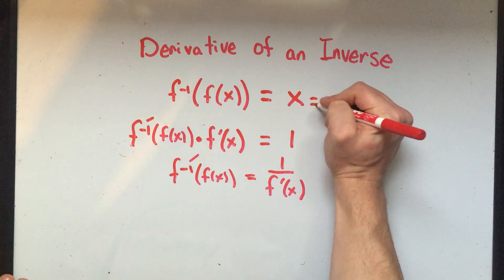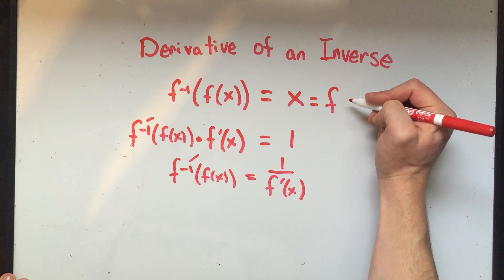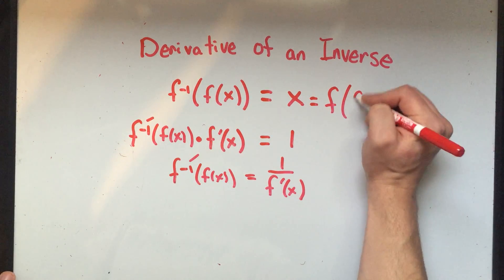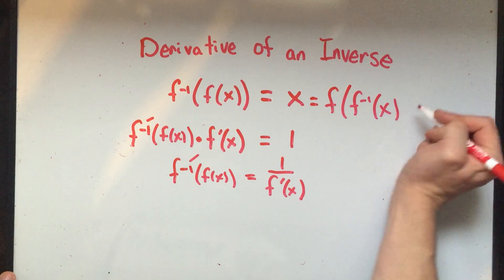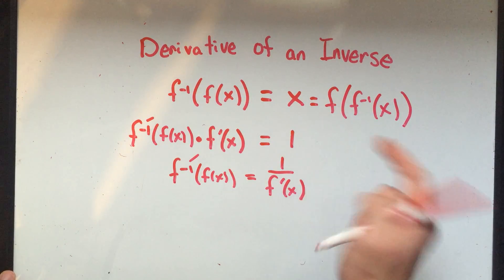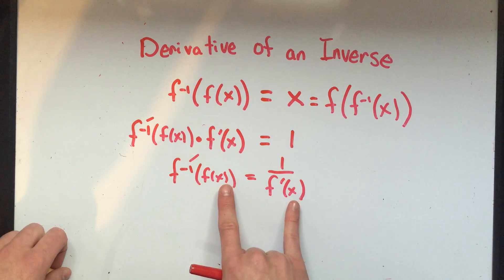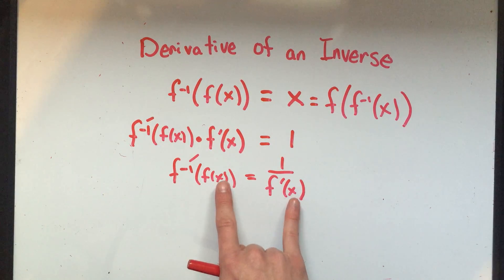Remember I could have done this the other way - I could have done f of f inverse of x equals x. Since both of these equations have x's in here, I can plug in anything I want for x to both sides. I could plug in 1, or 0, or even another function.